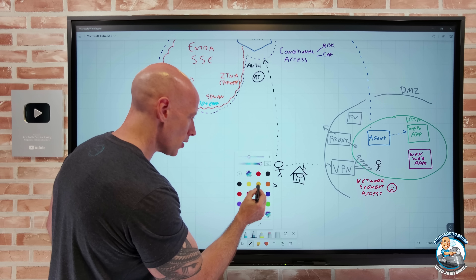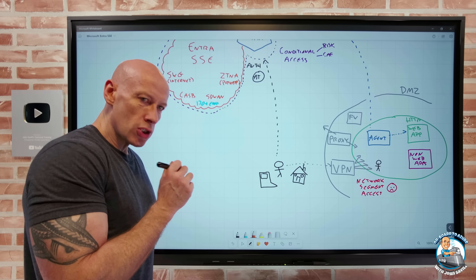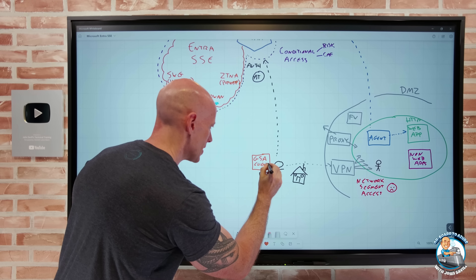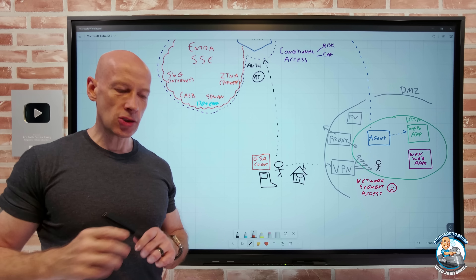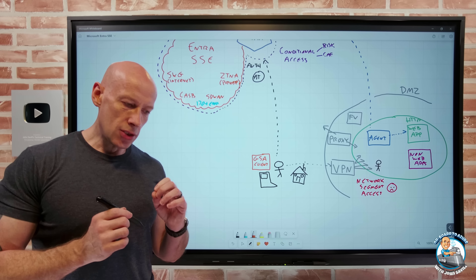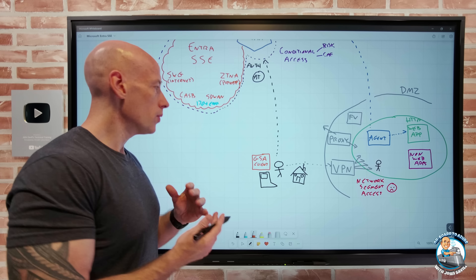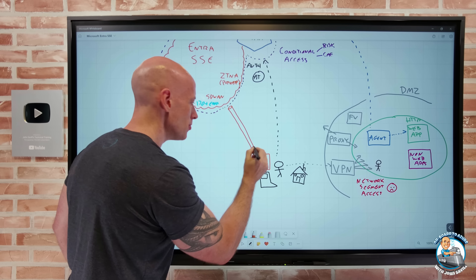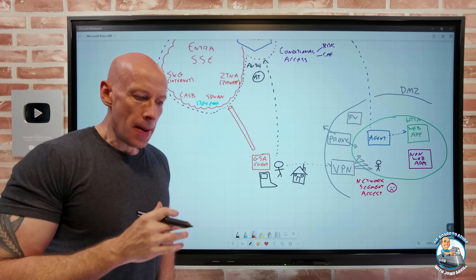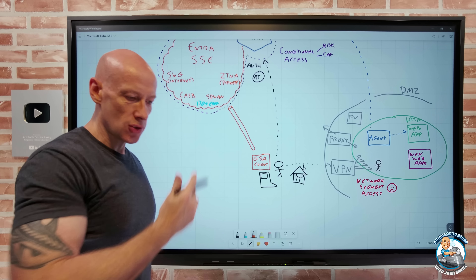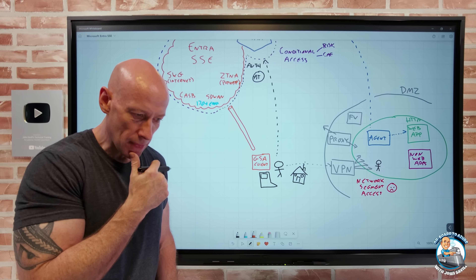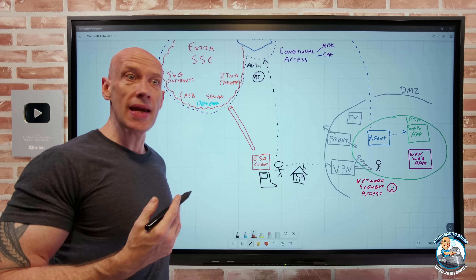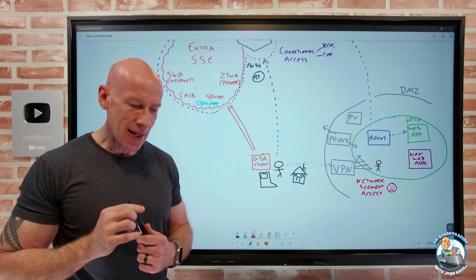The Global Secure Access client is going to establish a tunnel to the various services — connecting to services that act as a traffic relay for different types of service and can enforce the various requirements. It applies to both bring-your-own device and managed devices, but initially the scenarios are focused around managed corporate devices. There is also a concept of remote network connectivity — a site-to-site VPN today, potentially hooking into SD-WAN appliances in the future.